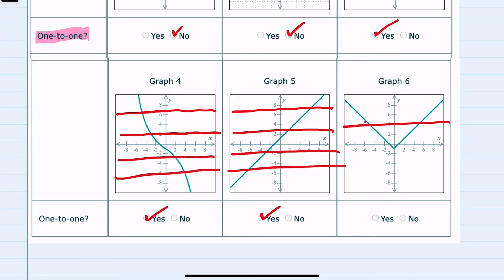Graph six, I can draw a horizontal line that crosses more than once. So no, this would not be one-to-one.